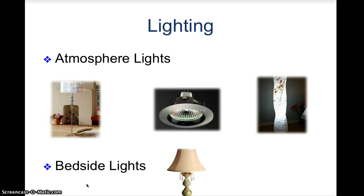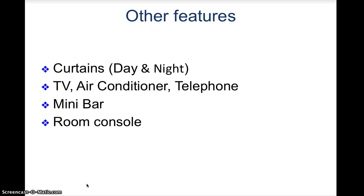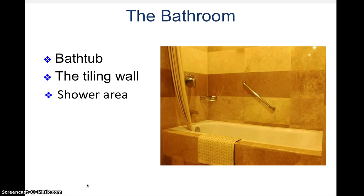Lighting plays a very vital role in the room's atmosphere. We have atmospheric lights and the bedside lights. The other features of the room are the curtains — day and night curtains — the television, air conditioner, telephone, minibar which is a mini fridge with some tidbits in it, and the room console. These are the main features of the room.